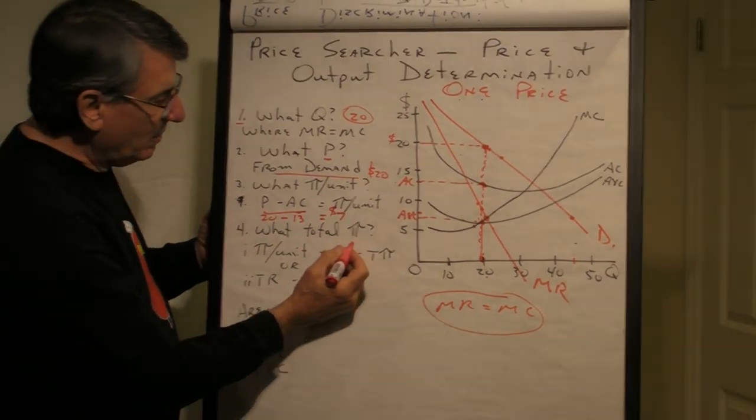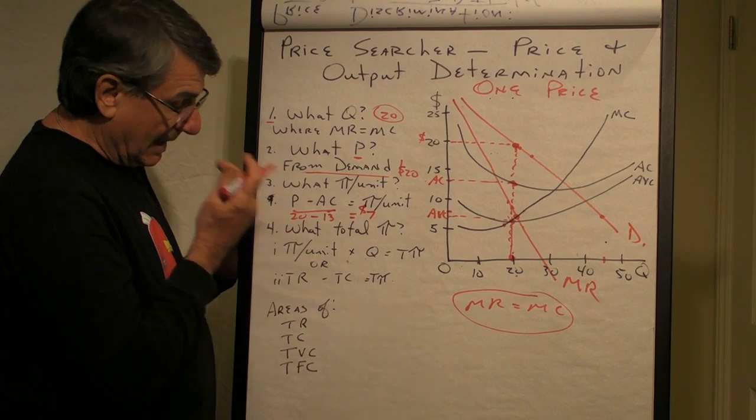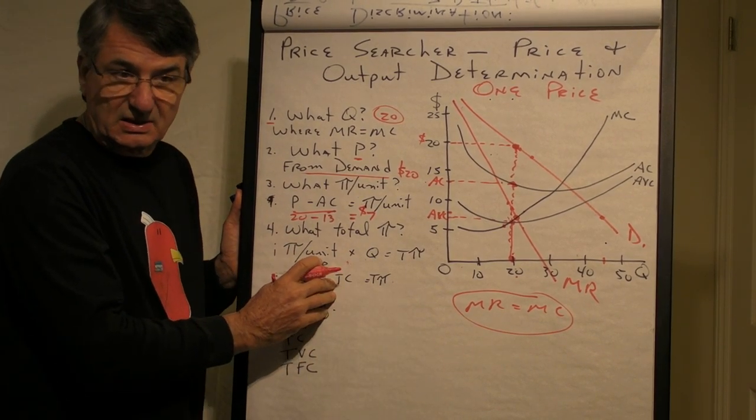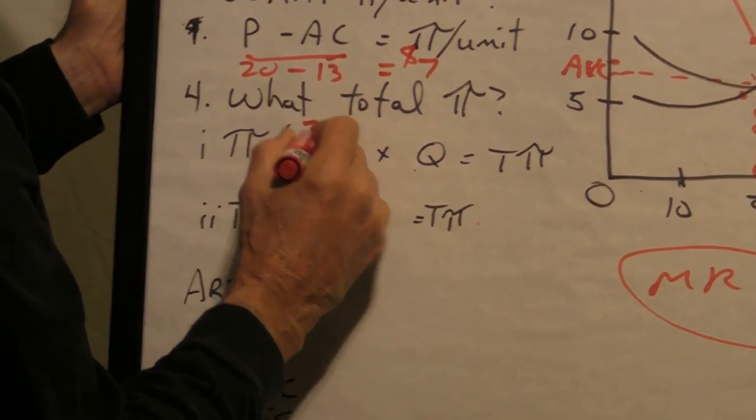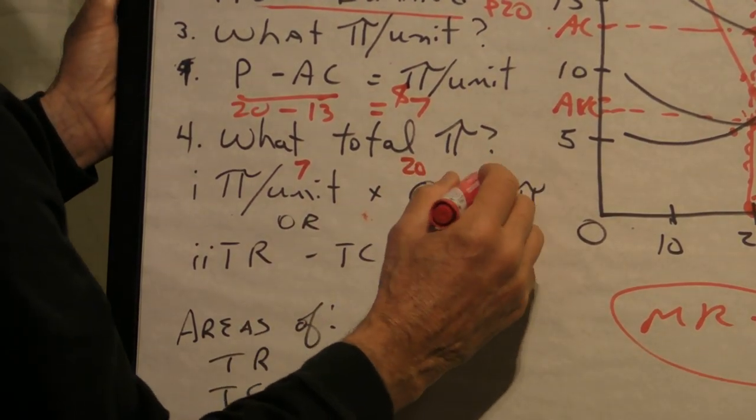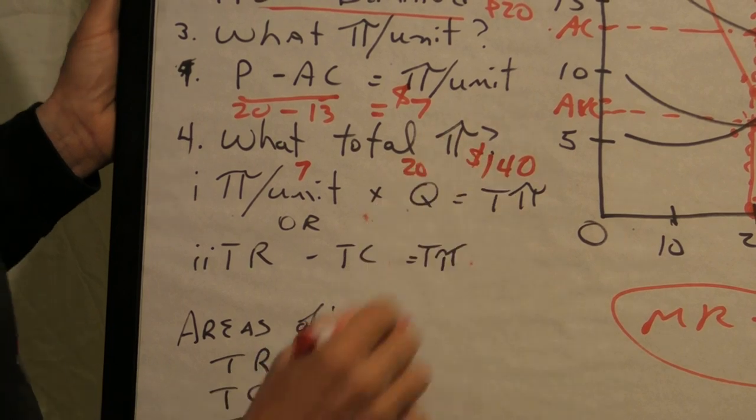And then, what will be the total profit? And the answer is, total profit is either calculated using profit per unit times the quantity you're producing. That's the easiest way, because you have both of these numbers. The profit per unit here is $7, and the quantity you're producing is $20, so the total profit will be $140, total profit.